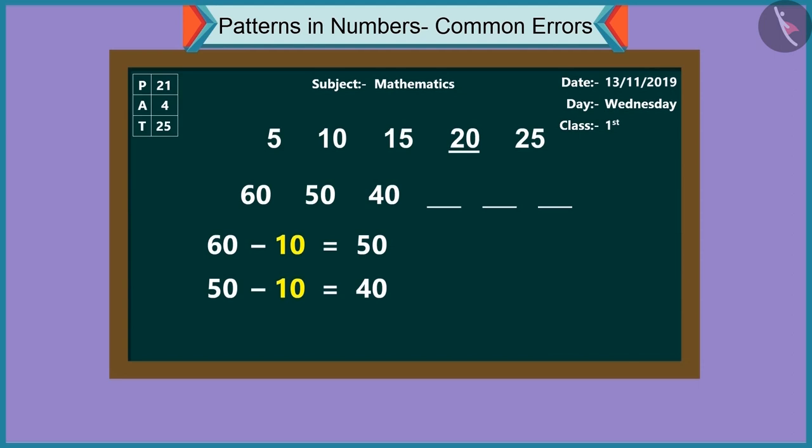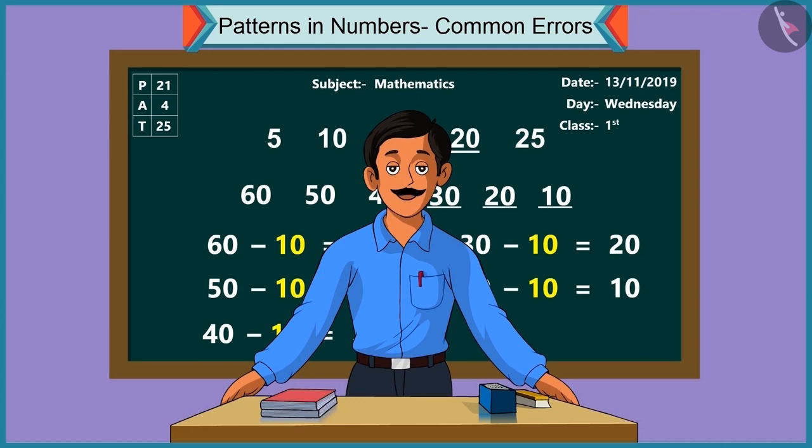Can you try now? Hmm. Subtracting ten from forty, we get thirty. Subtracting ten from thirty, we get twenty. Subtracting ten from twenty, we get ten. Absolutely correct.